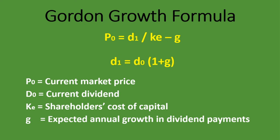To get P0 — the market price according to the dividend growth model using the Gordon growth formula, and these terms can be used interchangeably — we take D1, that is dividend at year one or period one. We get D1 by taking D0, the dividend at period zero, times one plus the growth rate. So it's D1 divided by KE, the shareholders' cost of capital or required rate of return, minus the growth rate G.